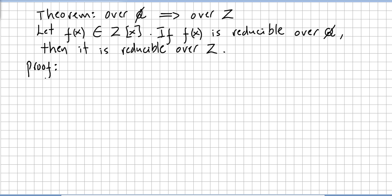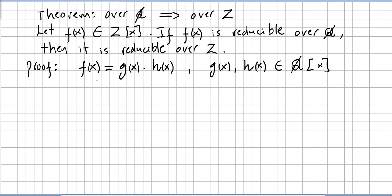We are going to get directly into the proof. I'm going to use concepts from the previous video, like the concept of content and primitive. Let us begin by assuming that f(x) is factorable — we can write f(x) equals g(x) times h(x), where g(x) and h(x) are in the ring of the rationals.